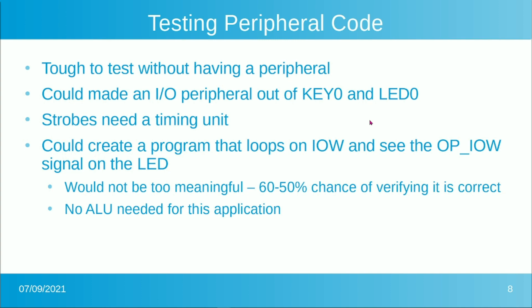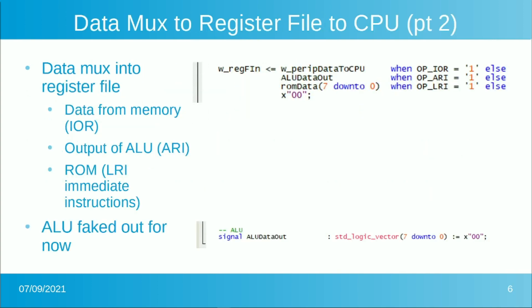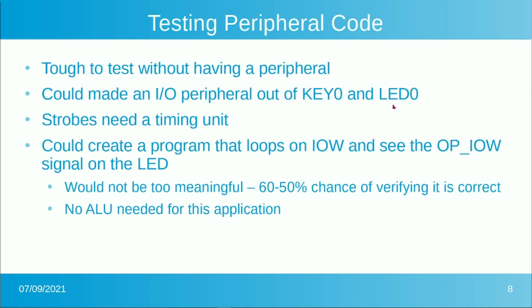How would we test that? It's pretty tough to test without having a peripheral. The strobes were set to zero in the previous slide, but if you had a real peripheral, you'd need those strobes, which would require the timing unit — the gray code machine — which we're going to build later. We could create a program that loops on IO write and see the IO write signal on an LED, but it wouldn't be too meaningful — it's about a 50-50 chance of verifying correctness, and really no ALU is needed for what we've got so far.